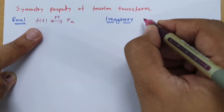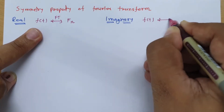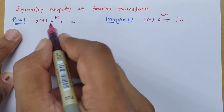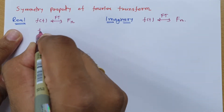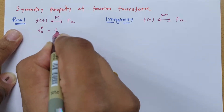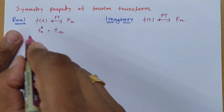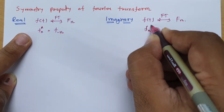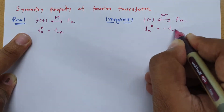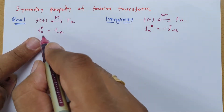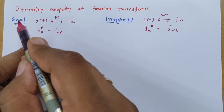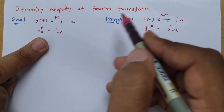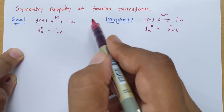For both real and imaginary cases, I'll consider input signal f(t) with Fourier transform F(n). For a real signal, the symmetry property states that the conjugate of F(n) equals F(-n). For an imaginary signal, the conjugate of F(n) equals negative F(-n). This is the basic symmetry property in Fourier transform.